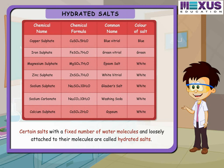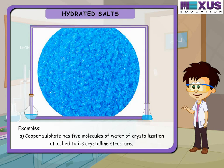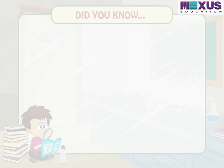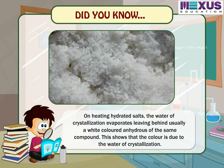Certain salts with a fixed number of water molecules loosely attached to their molecules are called hydrated salts. The water molecules attached to them are called water of crystallization. For example, copper sulfate has 5 molecules of water of crystallization, and iron(II) sulfate has 7 molecules. On heating hydrated salts, the water of crystallization evaporates, leaving behind a usually white-colored anhydrous form of the same compound, showing that the color is due to the water of crystallization.